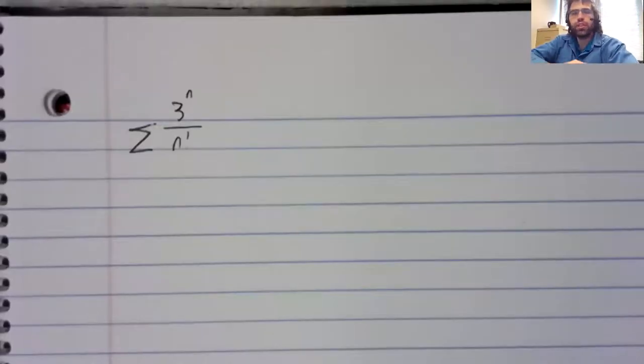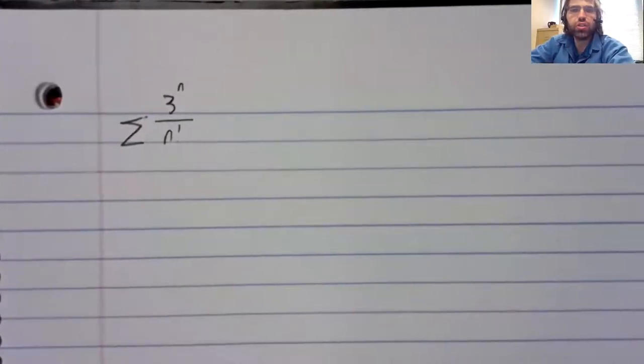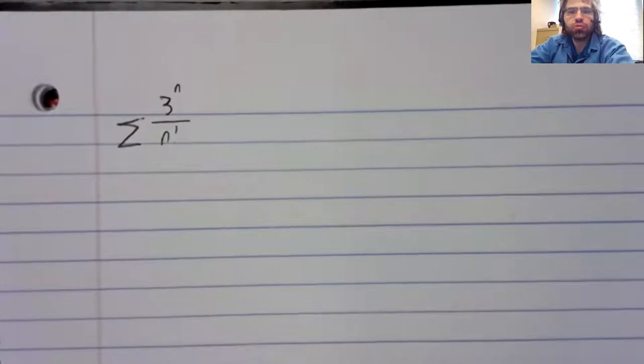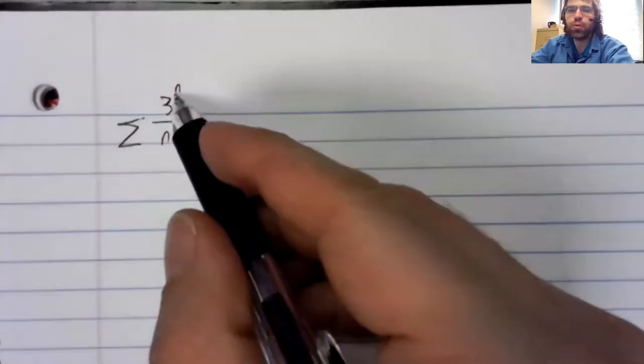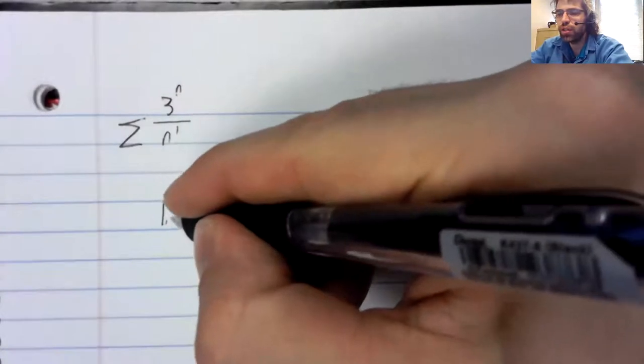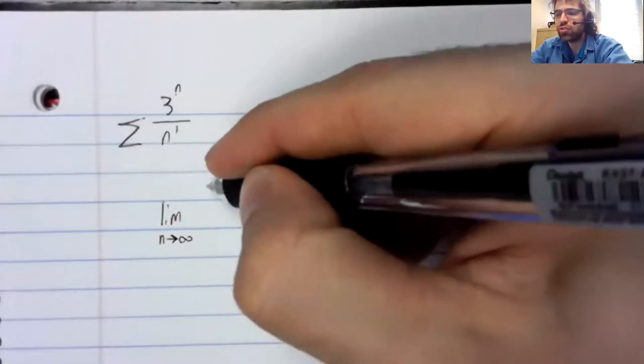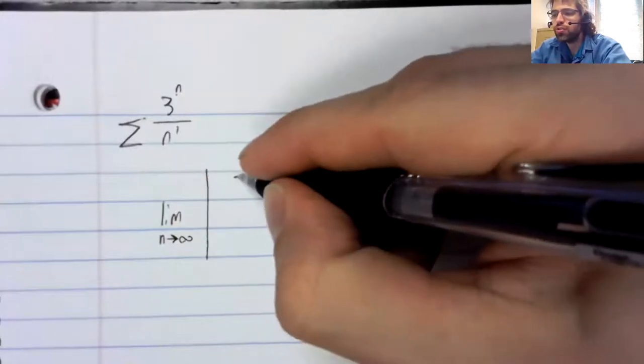Continuing on problem nine, sorry, problem 10. There aren't really absolute rules for which test to use, but the ratio test works well with powers and with factorials because those cancel well.